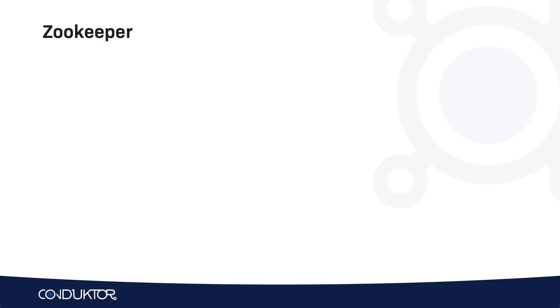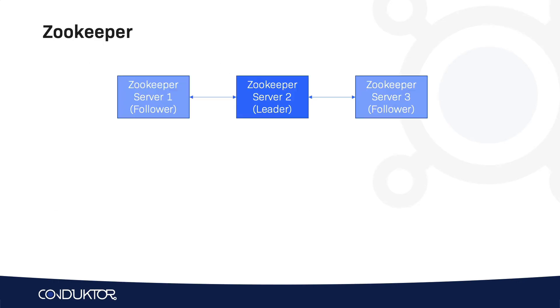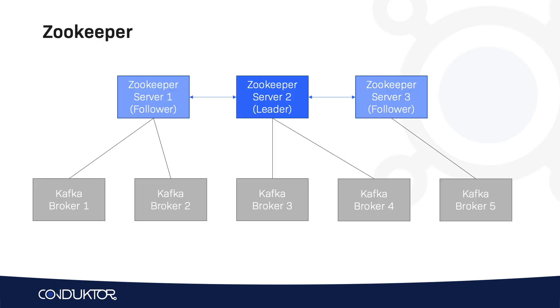As an example, ZooKeeper is going to have a leader and a few followers, and then the Kafka brokers are going to be connected to your ZooKeeper cluster to be managed. Very simple, and I don't want to spend too much time on it.